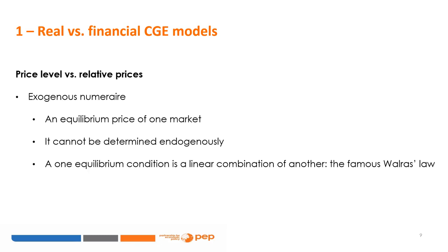The price of the numeraire cannot be determined endogenously because of the interrelationship within the model — one equilibrium condition is a linear combination of another. This interrelationship is known as Walras' law: when N minus one markets are in equilibrium, the last one is also in equilibrium. When all exogenous nominal variables are indexed, an increase in the numeraire increases all prices proportionally while leaving relative or real prices and real variables unchanged. This is called the nominal homogeneity test. For more on the numeraire, read Lemelin, 2017.